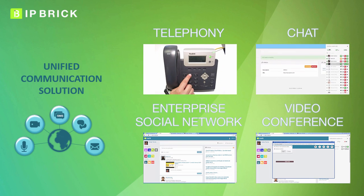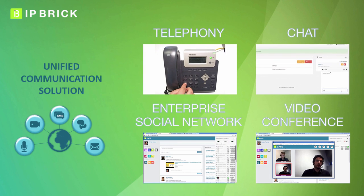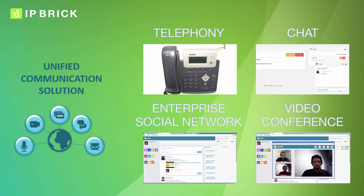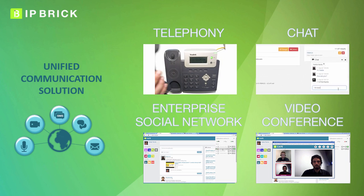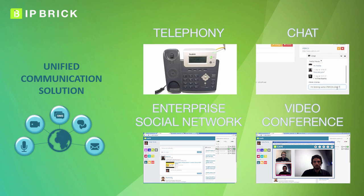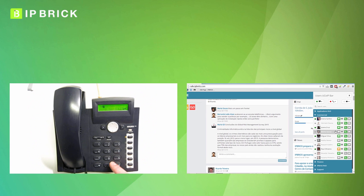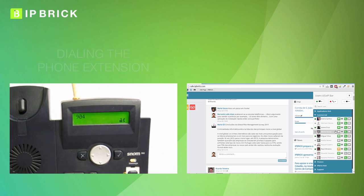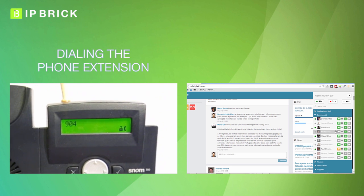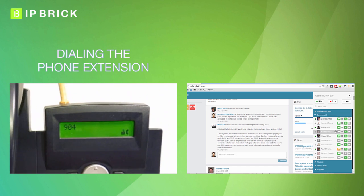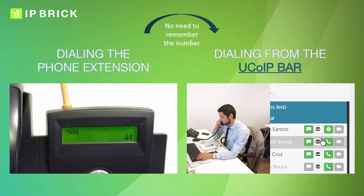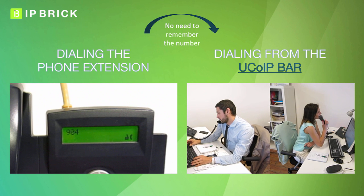Because it is a unified communications solution, it includes, among telephony, other types of communications such as video conference, chat, and an enterprise social network to serve as a communications hub. For example, if a co-worker wishes to make an internal call, instead of dialing the phone extension, which is difficult to memorize, he goes to the UKOIP bar inside the social network and makes the call.